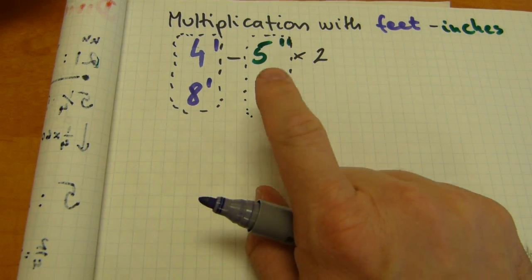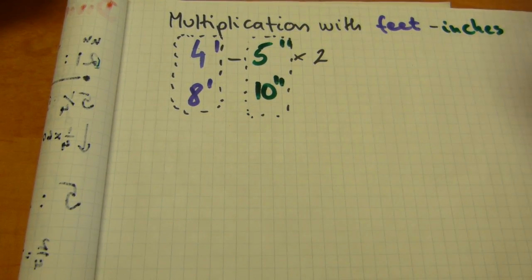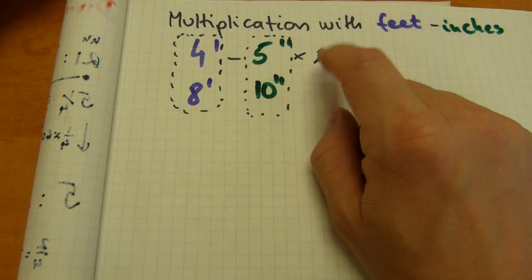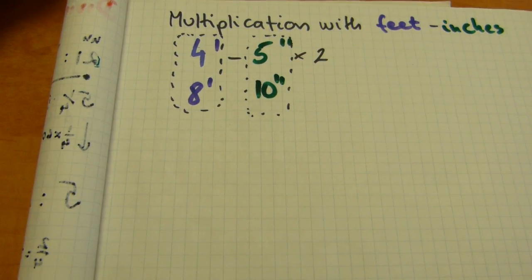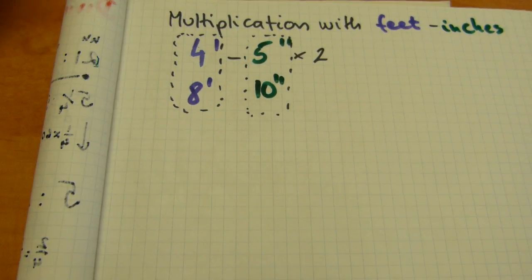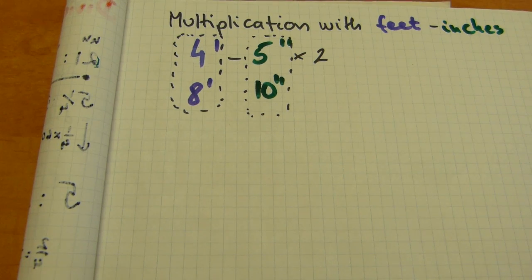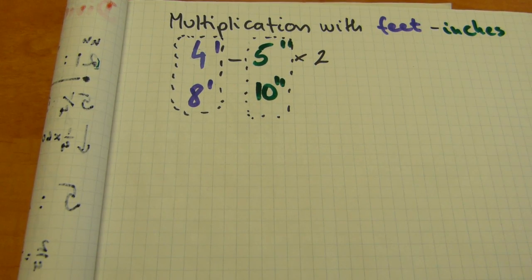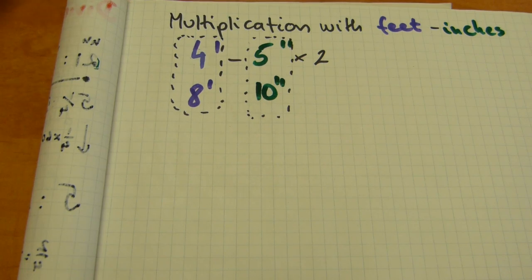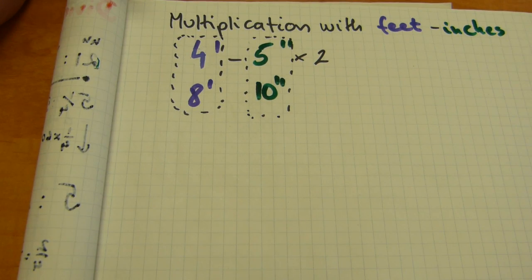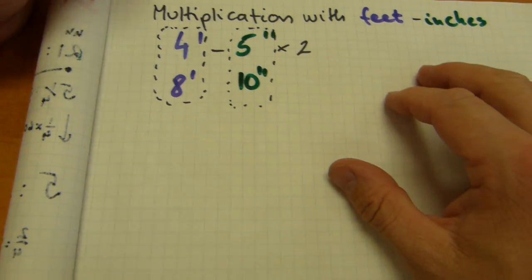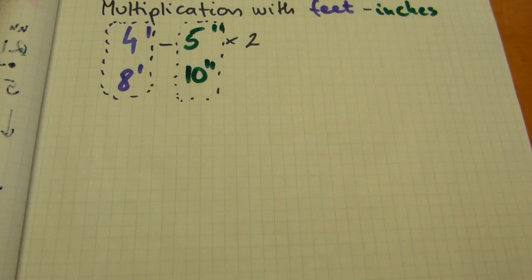Now what happens if you have more than 11 inches in the inches column? Say if this number was 3, then you would have 15 inches in the inches column. What that means is you would need to carry some over into the feet column because you can exchange some of those 15 inches for a whole foot.